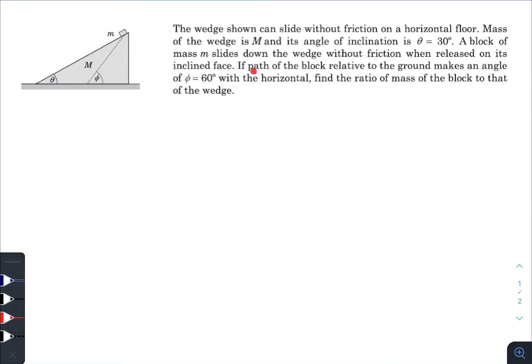If the path of the block relative to the ground makes an angle of phi, that is 60 degrees with the horizontal, find the ratio of mass of the block to that of the wedge.